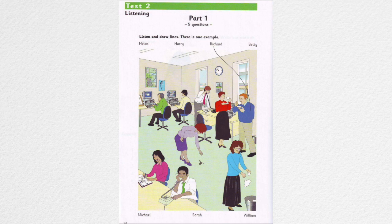And that's my friend Betty. Where? What's she doing? Her scissors have fallen on the floor and she's picking them up. Oh, yes. I can see her.